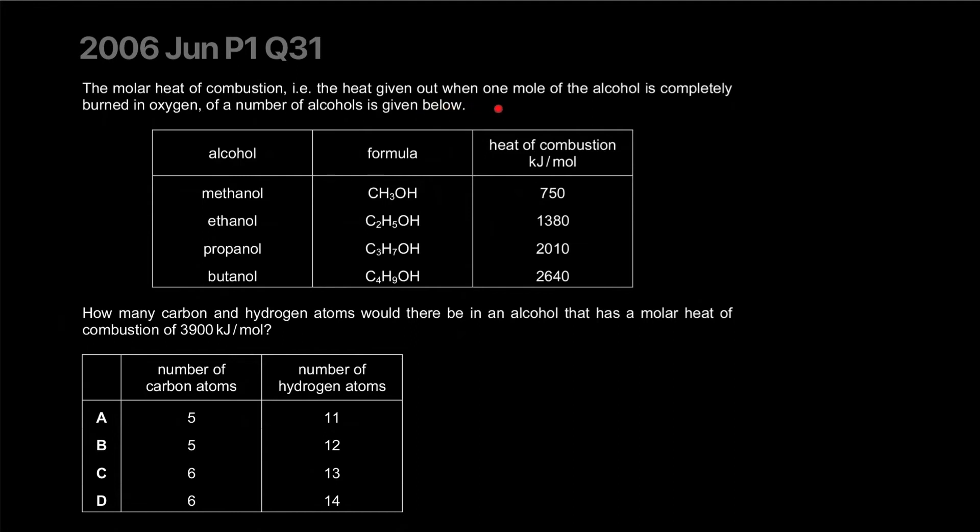The molar heat of combustion - the heat given out when one mole of alcohol is completely burned - of a number of alcohols is given below. How many carbon and hydrogen atoms would there be in an alcohol that has a molar heat of combustion of 3900? I think we just divide it, so it's almost increasing by a table of 7. Like increasingly, so what's the table of 7? 7 times 1 is 7, 14, 21, 28. So if I continue with this, 28, what's the table, 35, and it's gonna be 35.